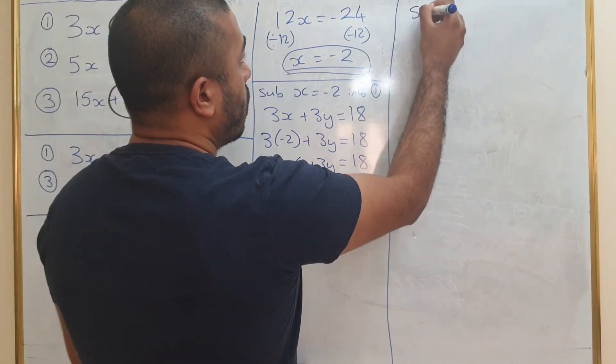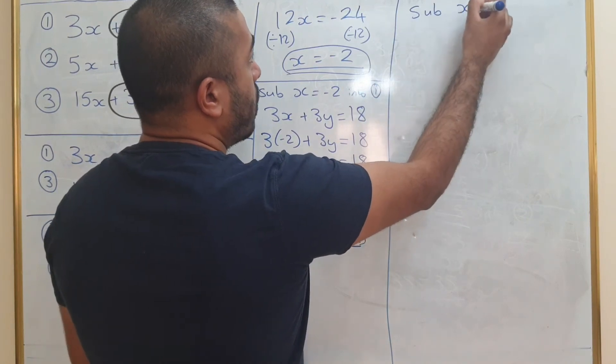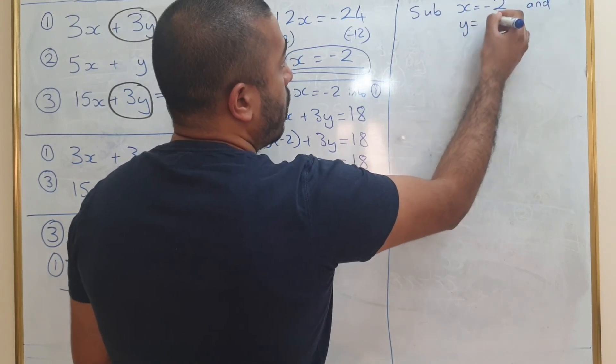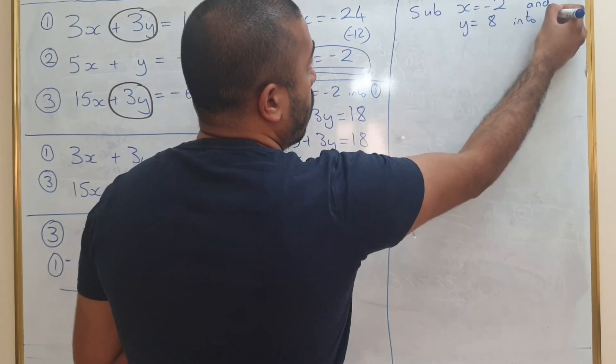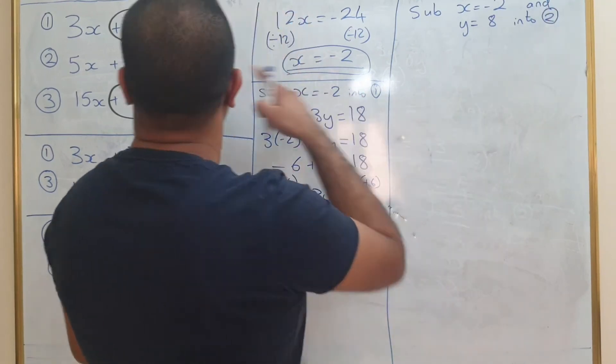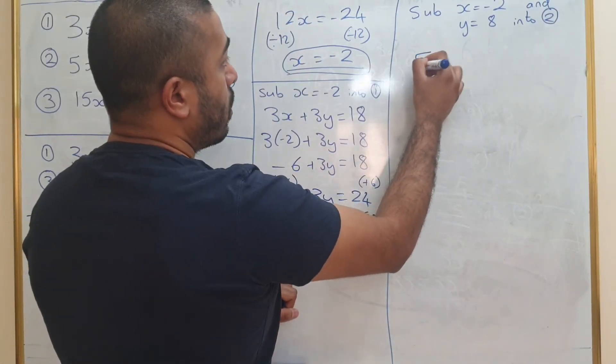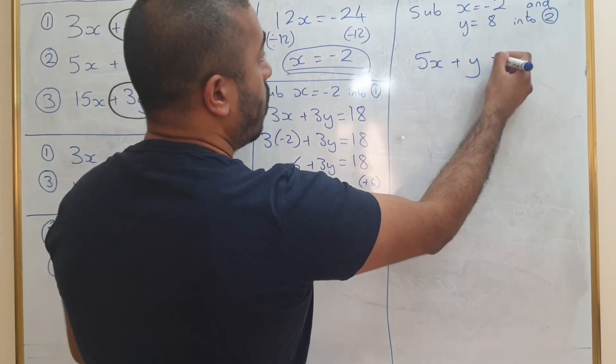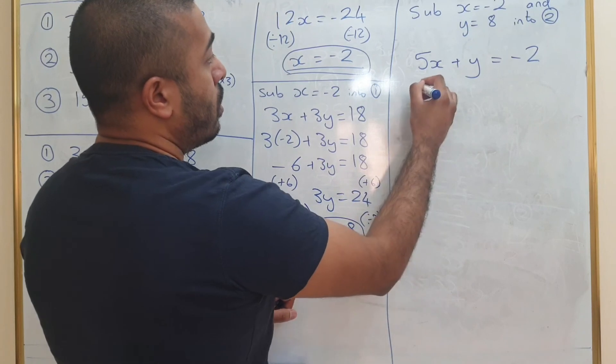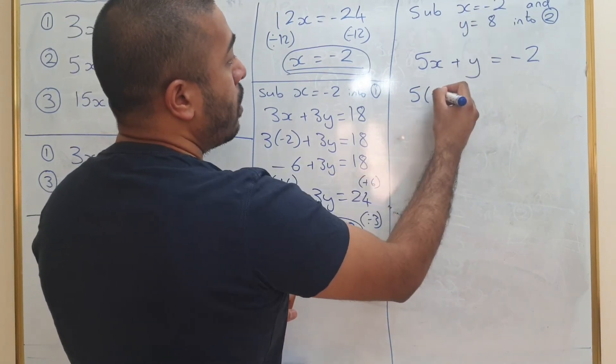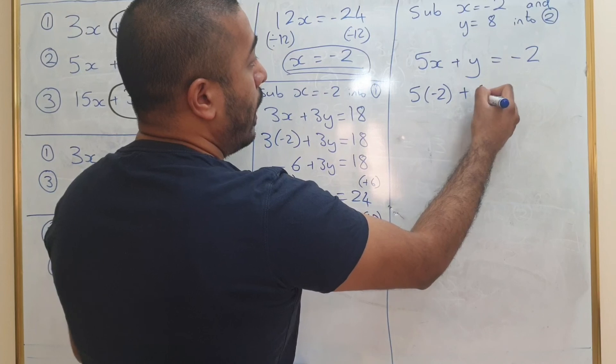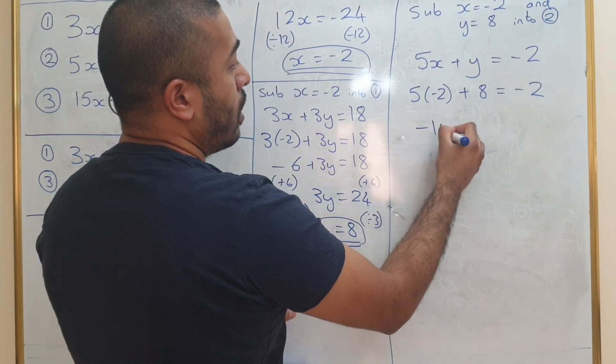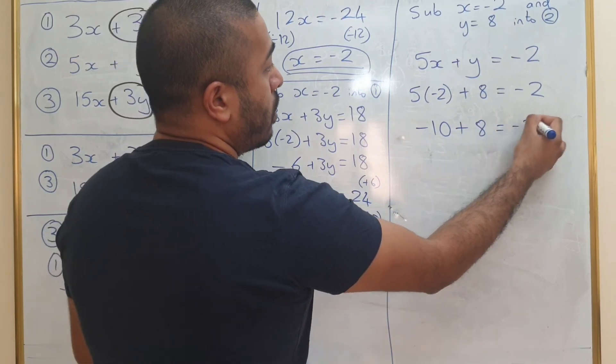Sub x equals minus 2 and y equals 8 into 2. So equation 2 is 5x plus y equals minus 2. So that's 5 times minus 2 plus 8 equals minus 2. So that's minus 10 plus 8 equals minus 2.